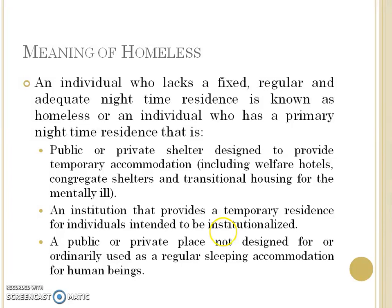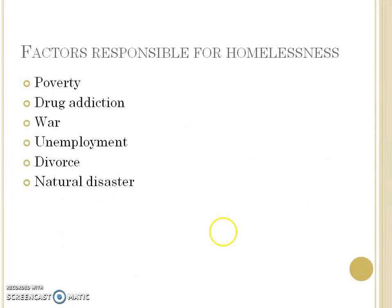The third category is a public or private place not designed for or ordinarily used as regular sleeping accommodation for human beings — for example, someone sleeping on railway platforms or on roadsides and footpaths. Such a place is not a regular sleeping accommodation, and a person in this situation is also considered homeless.